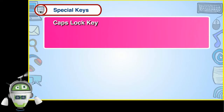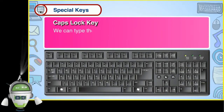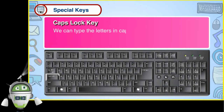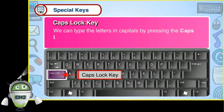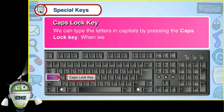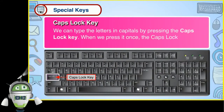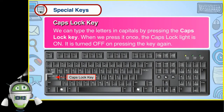Caps lock key. We can type the letters in capitals by pressing the caps lock key. When we press it once, the caps lock light is on. It is turned off on pressing the key again.